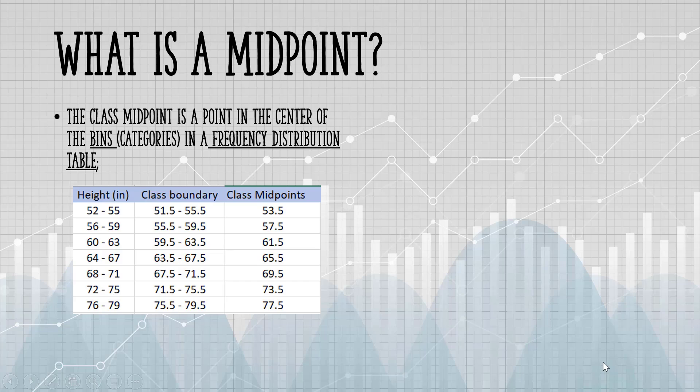The class midpoint is a point in the middle of the categories in a frequency distribution table. For example, the first category is a height of 52 to 55. The number right in the middle would be 53.5.